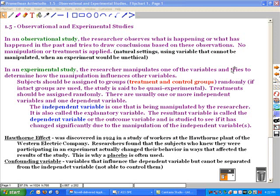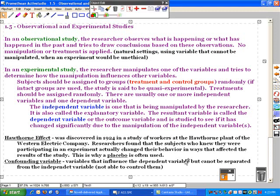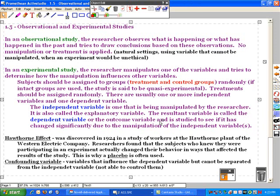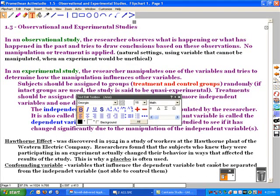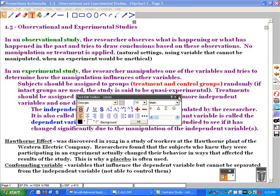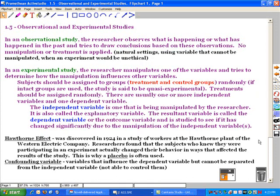Now, because sometimes that's difficult to do, you'll notice at the very bottom of this slide, there's a term called confounding variables. Sometimes there are variables that are going to influence that dependent variable, and you just cannot separate it from the independent variable. We're not able to control them at all. And you do the best you can. You try to do as much as you can, but if for some reason you can't, then you would want to make a note of that in your study and possibly redo the study just to make sure that something unforeseen hasn't caused a result.